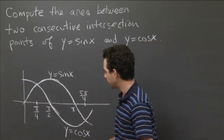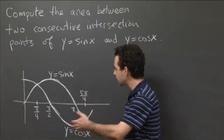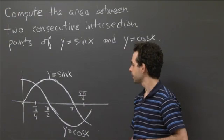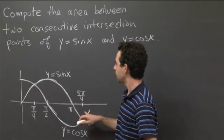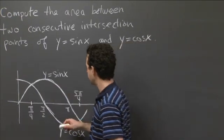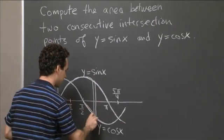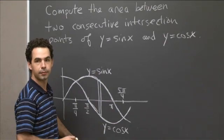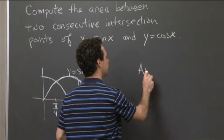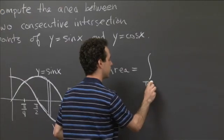What I want to do is just view this region as cut into a lot of little rectangles. I want to integrate the height of those rectangles in order to get the area of the whole region. In this case, the upper curve is y equals sine x, and the lower curve is y equals cosine of x. So the height of a little rectangle is going to be sine x minus cosine x. Its width is dx, and then I add them all up by integrating.